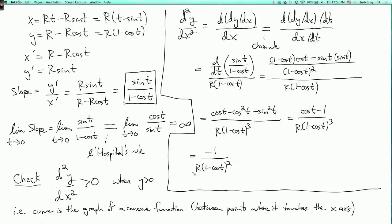Is this positive or negative? Well, r is positive, that's the radius of our circle. 1 minus cos t squared is positive, I'm assuming that we're not touching the axis, so cos t is not going to be 1. And minus 1 is negative, so this is negative, and that's what I wanted to check.